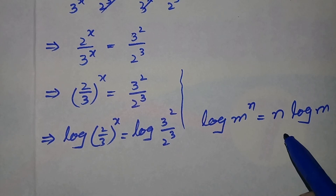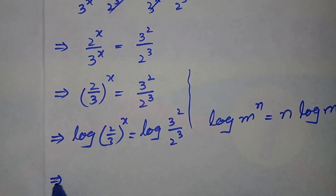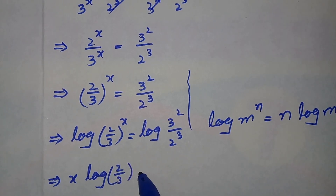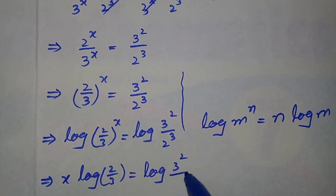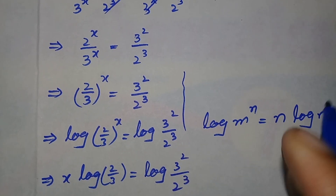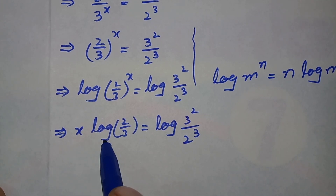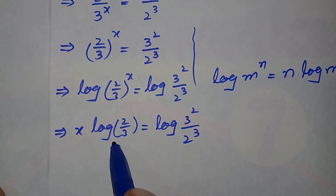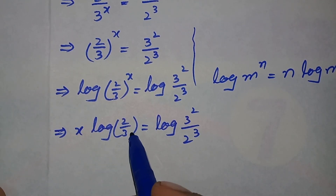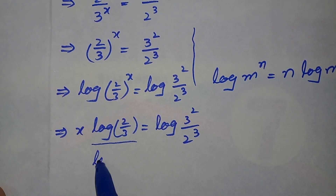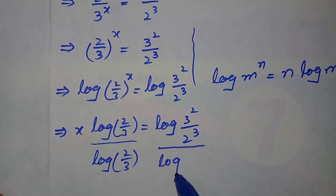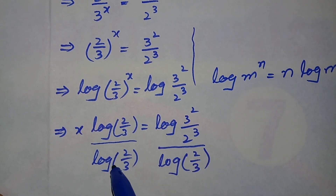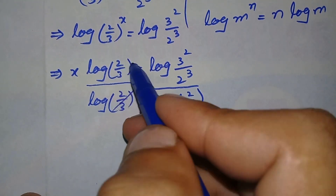By using this log formula we can write the left hand side as: x times log of (2 divided by 3) is equal to log of 3 raised to power 2 divided by 2 raised to power 3. As we need to find x, we will eliminate log of (2 divided by 3) from this side. We divide both sides by log of (2 divided by 3), and on the left hand side these cancel, leaving only x.